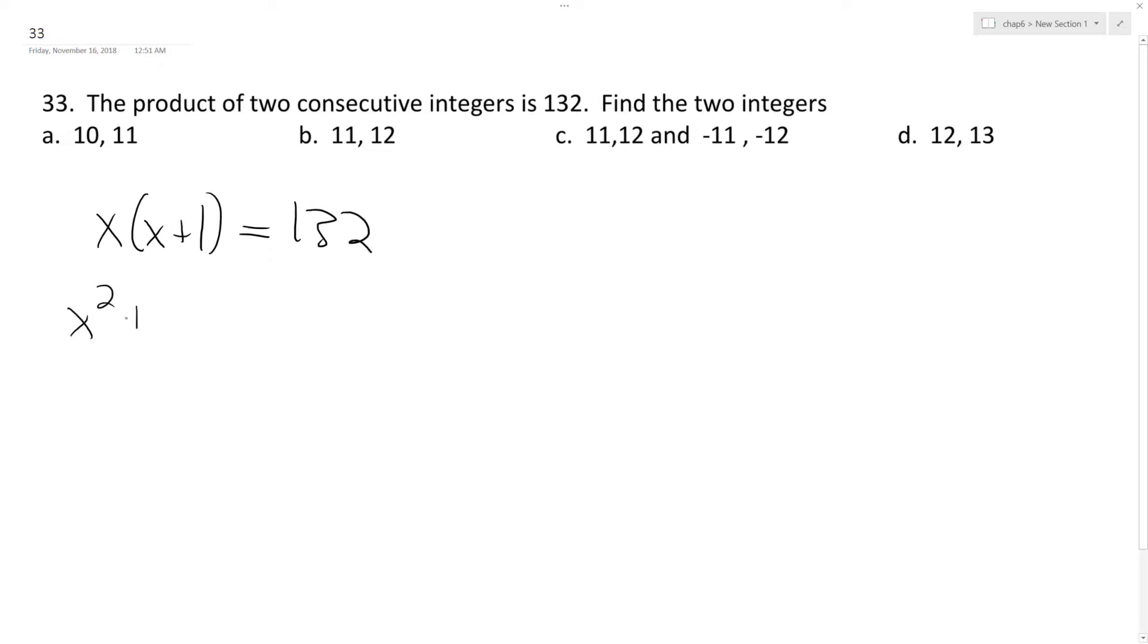So x squared plus x, and then we'll bring the 132 over here, is equal to zero.